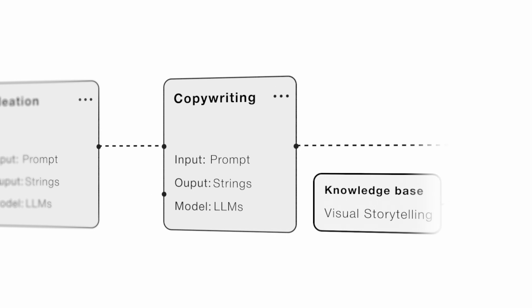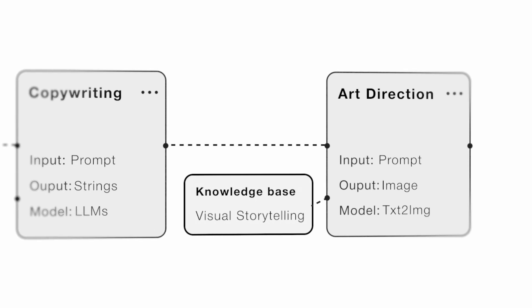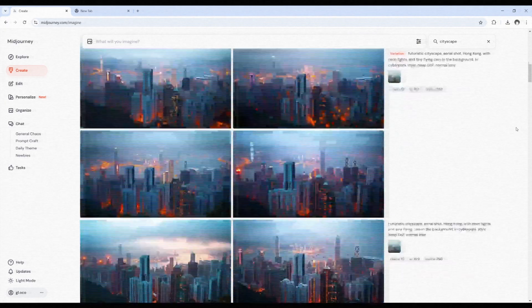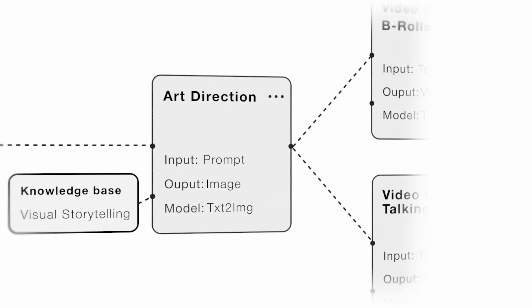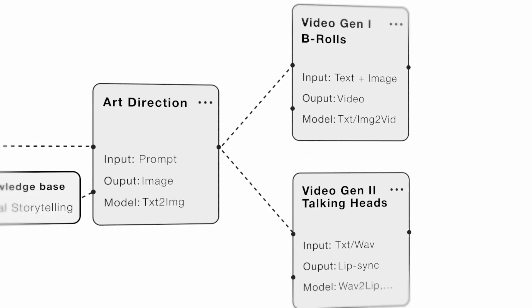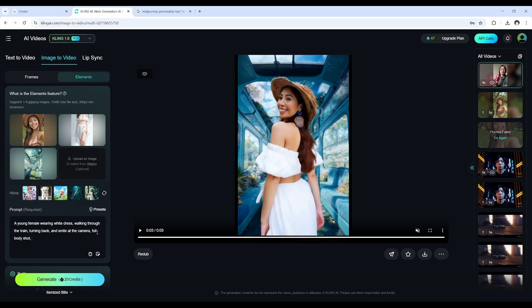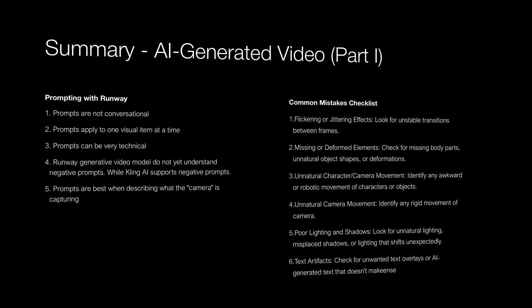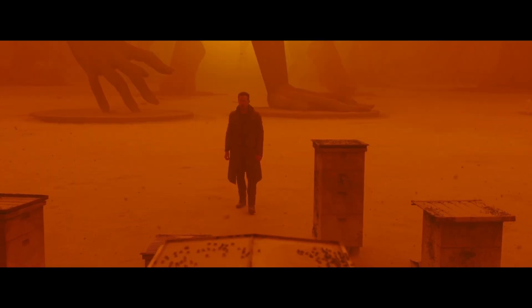Moving on to art direction. This isn't just about image generation — it's about understanding visual languages like style, color, and cinematography. AI tools like Runway Gen3 and Kling AI are used here. Prompt engineering plays a big role in getting the right look, and understanding cinematography — especially framing and camera movement — can help generate keyframes and make video generation much more effective.